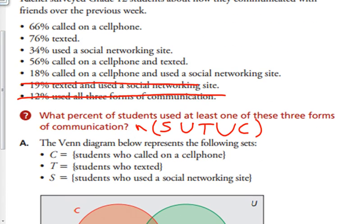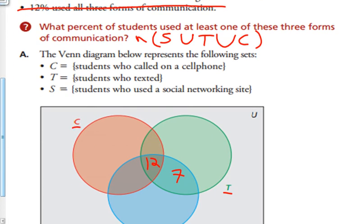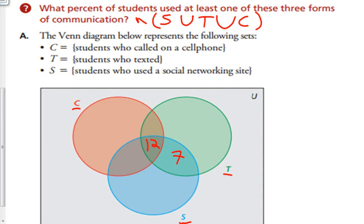Next it says 18% called on a cell phone and used a social networking site. 18% called on a cell phone and used social networking. 18 minus 12 gives me 6.